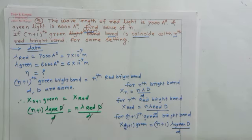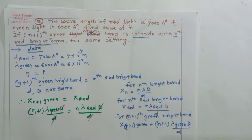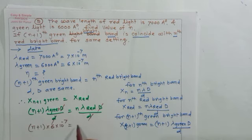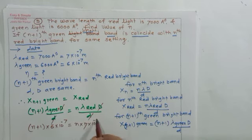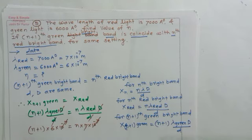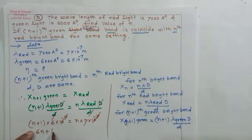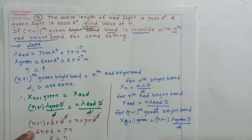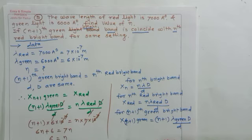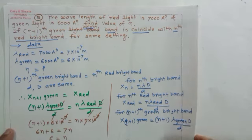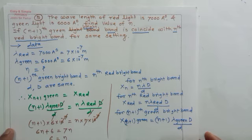Capital D and small d cancel from both sides. So: (N+1) × λ_green = N × λ_red. Substituting: (N+1) × 6 × 10⁻⁷ = N × 7 × 10⁻⁷. The 10⁻⁷ cancels. Expanding: 6N + 6 = 7N. Therefore N = 6. So when the 7th green bright band coincides with the 6th red bright band, N equals 6. This is the answer.